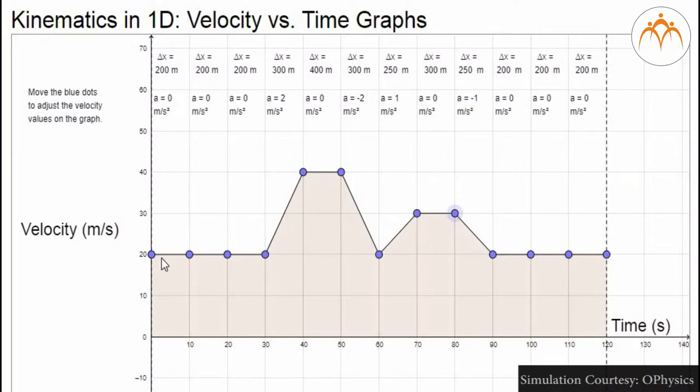In this graph, speed is 20 meter per second for the first 30 seconds, then increases for some time and it is 40 meter per second between 30 to 40 seconds and again goes up and down as time progresses.